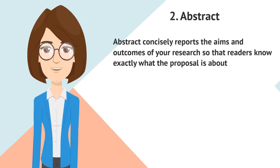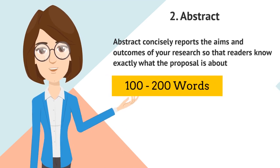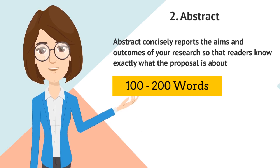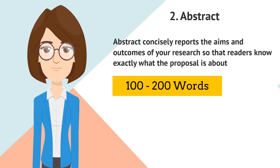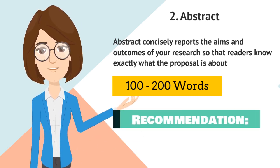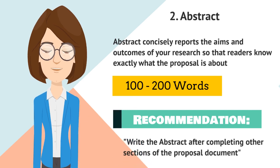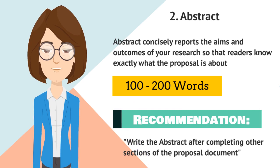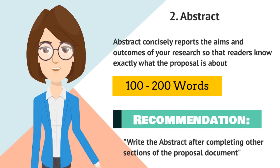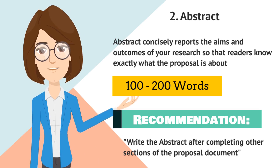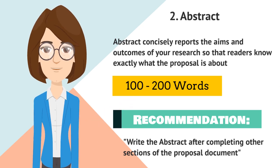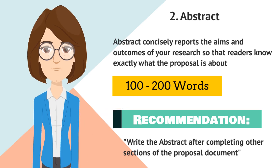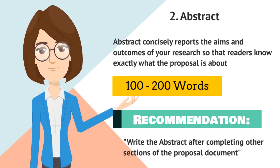An abstract is usually around 100 to 200 words, but there is often a strict word limit, so make sure to check the requirements. The recommendation is to write it after completing other sections of the proposal document. It should be a completely independent, self-contained text — not an excerpt copied from your paper or dissertation. An abstract should be fully understandable on its own to someone who hasn't read your full paper or related sources.